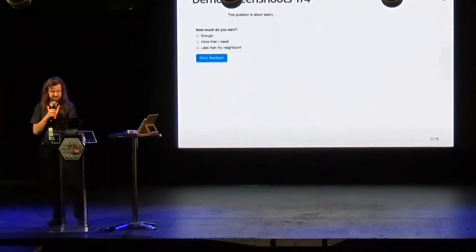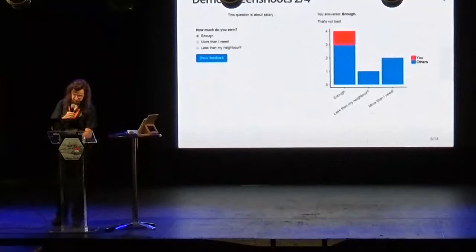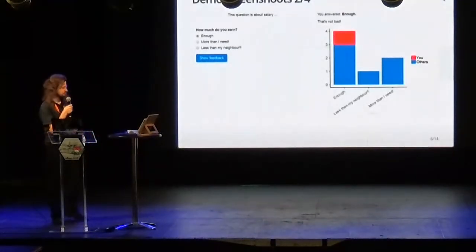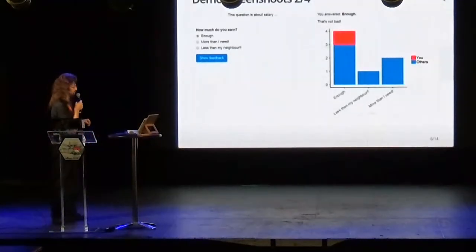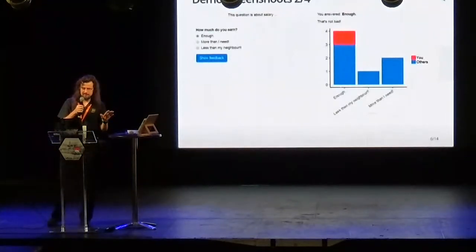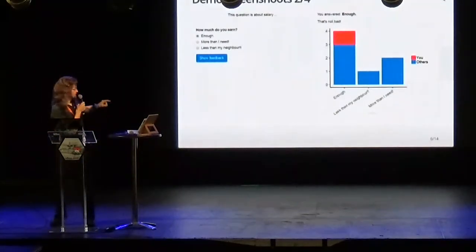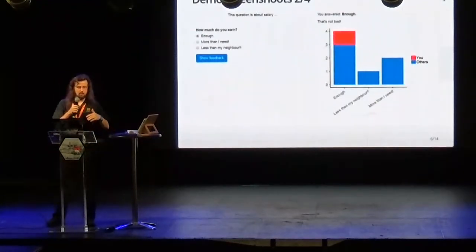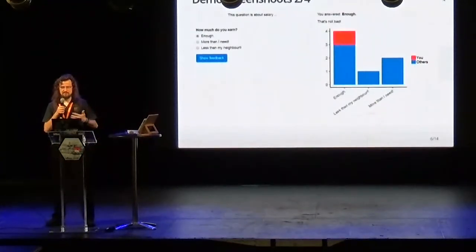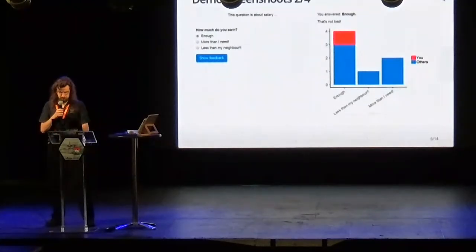Let's say I choose 'enough.' My answer was enough — that's not bad. This is feedback for me. I can see the distribution of answers of other users, and in red it's also shown where my answer is located relative to the answers of other users.